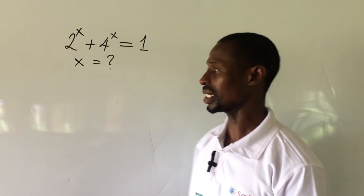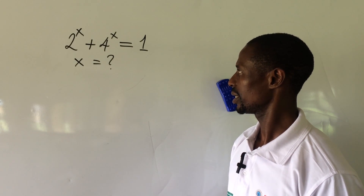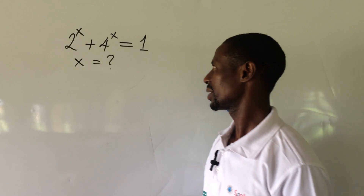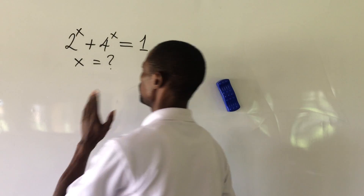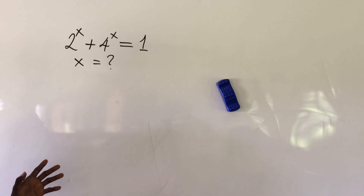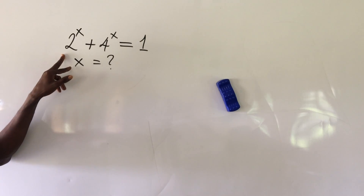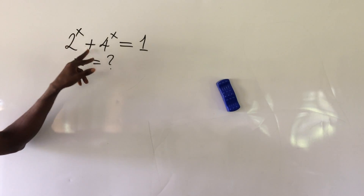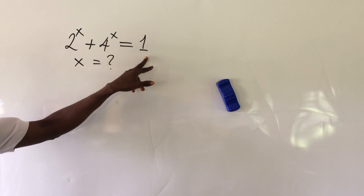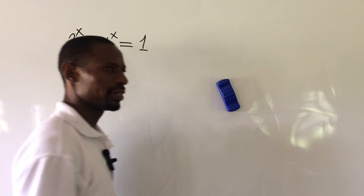Welcome to today's challenge. Today's challenge is on an exponential equation. The equation looks simple, but not as easy as you may think. The equation is 2 to the power of x plus 4 to the power of x equal to 1. What would be the possible value of x?